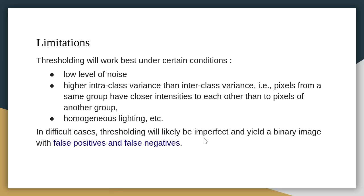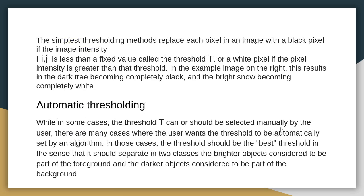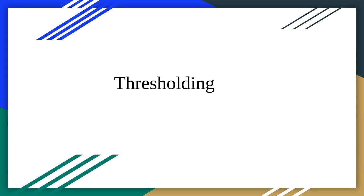In difficult cases, thresholding will likely be imperfect and yield a binary image with false positives and false negatives. In such cases, adaptive or Gaussian thresholding can give better results. Thank you.